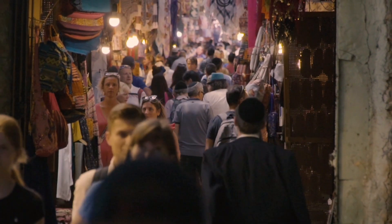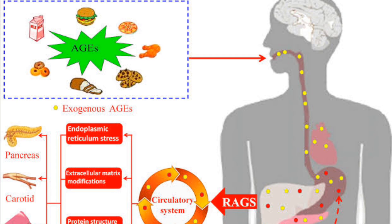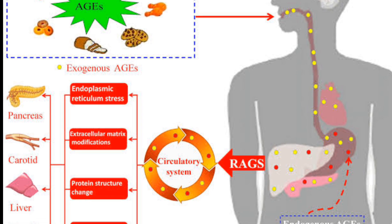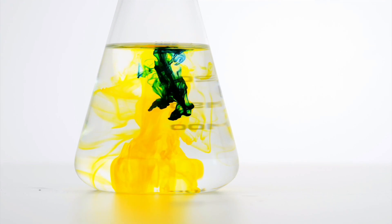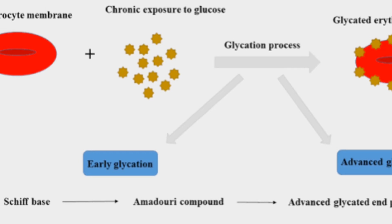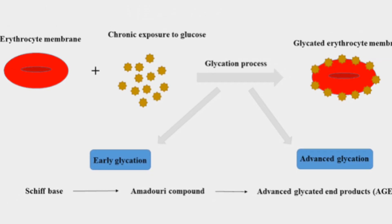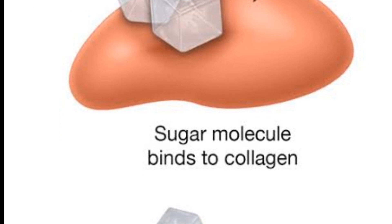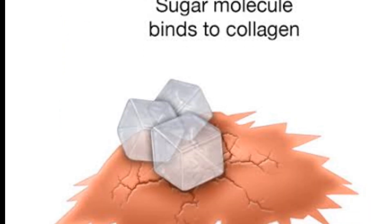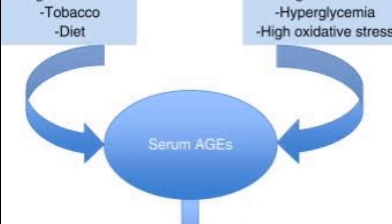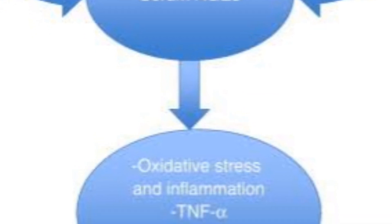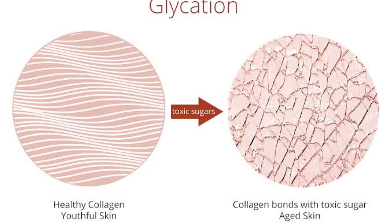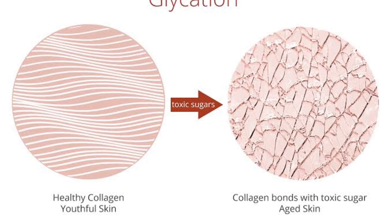The consequences of glycation are multifaceted and far-reaching, affecting various physiological systems and processes. At the cellular level, glycation disrupts the structure and function of proteins, impairing their ability to carry out essential biological functions. This protein damage accumulates over time, contributing to the aging process and the development of age-related diseases. Furthermore, AGEs can trigger inflammatory responses and oxidative stress, perpetuating a cycle of tissue damage and dysfunction that underlies the pathogenesis of chronic diseases.